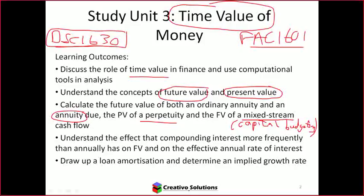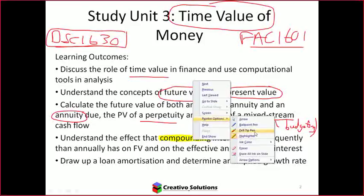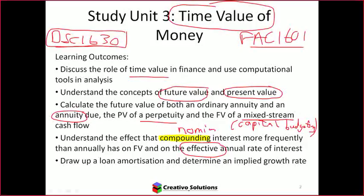When looking at time value of money, we need to understand compounding — a very important concept that comes up a lot in calculations. We'll discuss the difference between an effective rate and a nominal rate, and how they're important from a financial management point of view. The last bit is understanding how to amortize a loan: identifying the balance outstanding, total interest paid, and the capital portion.